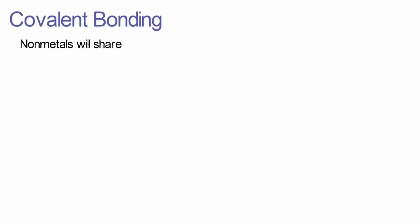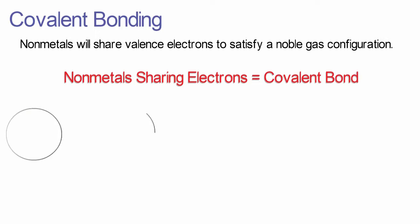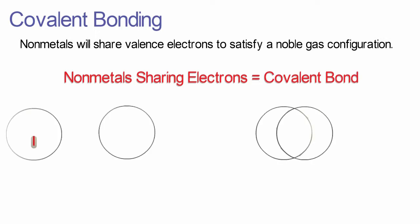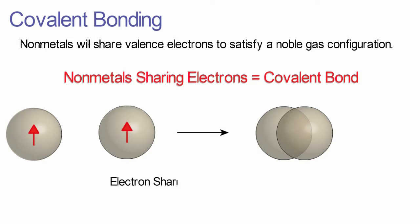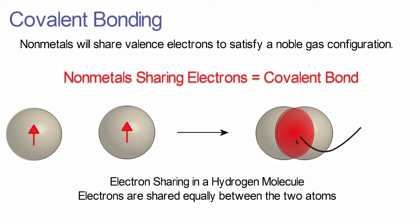A covalent bond is equal electron sharing between bonded nonmetal atoms. Instead of transferring electrons between bonding atoms, bonded nonmetals will share valence electrons to achieve a noble gas configuration. In a covalent bond, the electrons are shared equally between the bonded atoms. Sharing electrons allows two bonded hydrogen atoms to attain the nearest noble gas configuration of helium. The area of highest electron density will be between the two bonded hydrogen atoms, and each hydrogen now has access to two electrons.